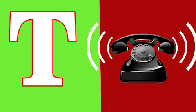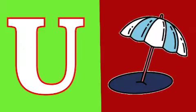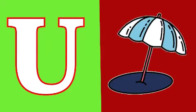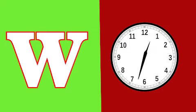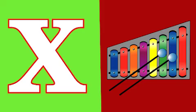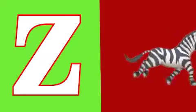T for telephone, U for umbrella, V for van, W for watch, X for xylophone, Y for yak, Z for zebra.